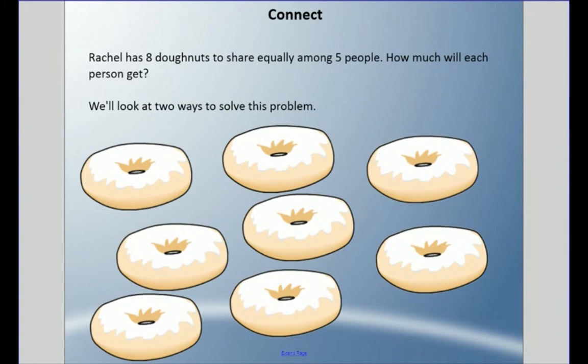Our story problem has Rachel with eight donuts to share equally among five people. How much will each person get if we share this equally? We're going to look at two different ways to solve this problem.